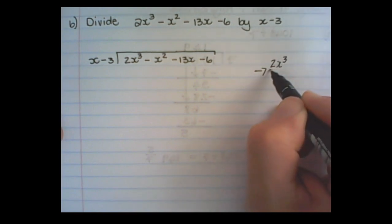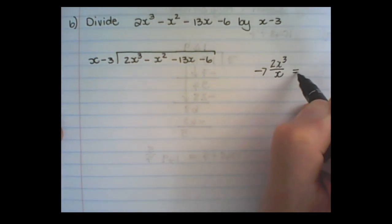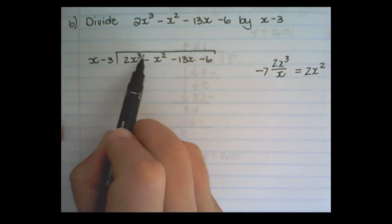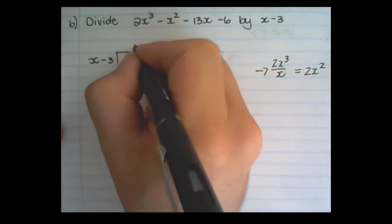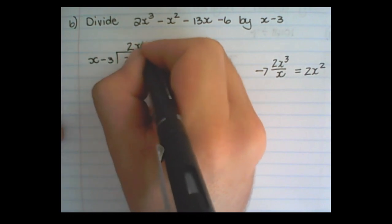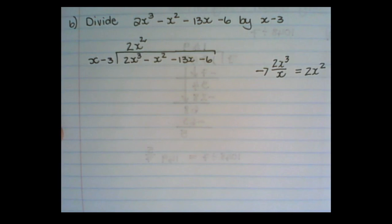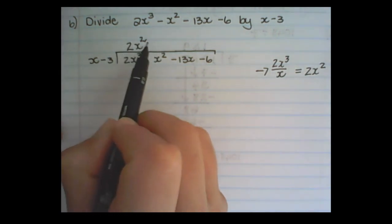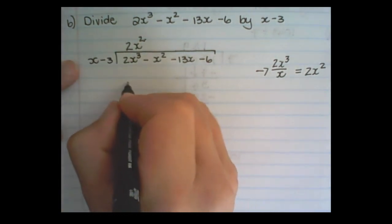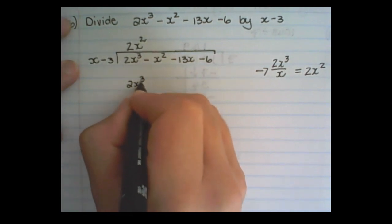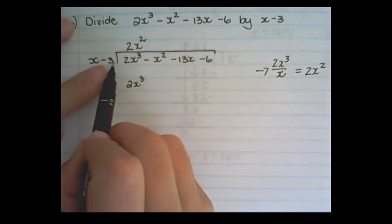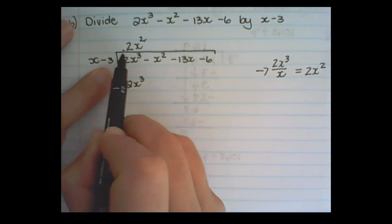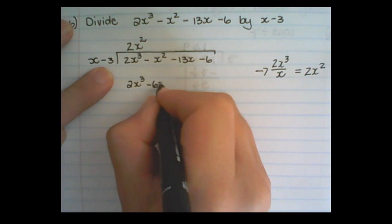2x cubed divided by x is 2x squared. Then what I need to do is multiply 2x squared with x, which will become 2x cubed. And I multiply 2x squared with negative 3. So 2x squared times negative 3 will produce a negative 6x squared.